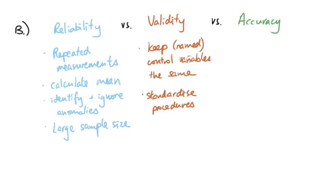Another way to improve validity is to standardize your procedures. For instance, when collecting transect, systematic, or random sampling data, you need to specify how you are collecting data in exactly the same way — such as placing the quadrat with the bottom left corner on the coordinate, or standardizing how you use a sweep net or pooter. For an osmosis practical, you would standardize exactly how you blot the potato cylinder after the experiment, such as rolling it three times on tissue paper, to ensure all results collected are valid.